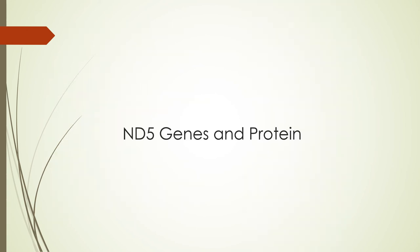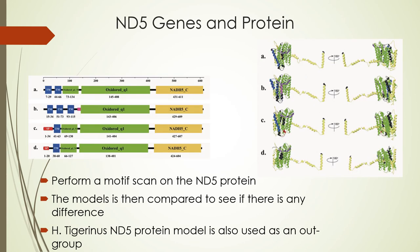The last method is the ND5 gene and protein analysis. We performed a motif scan on the ND5 protein of Hoplobatrachus rugulosus wild type, bred type, and Hoplobatrachus tigerinus as an outgroup. After that we reconstructed a three-dimensional protein model, which was then compared to identify any differences in structure.